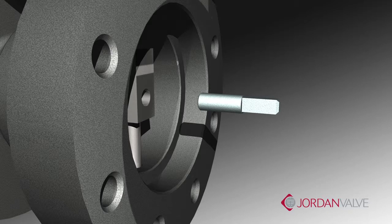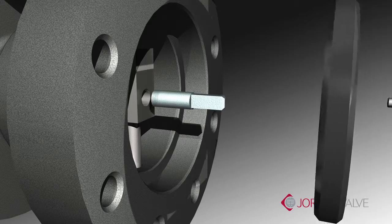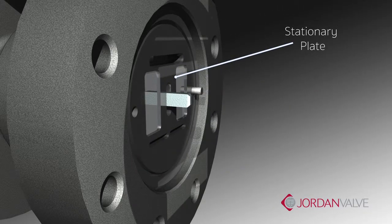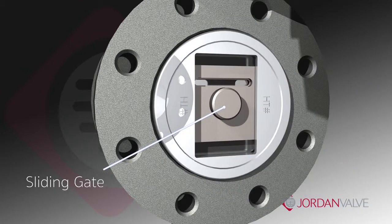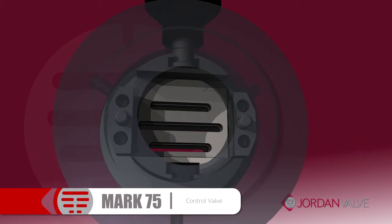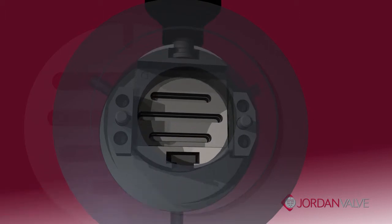The sliding gate is made up of three components: a stationary plate with multiple orifices, a slotted disc which moves across the face to control the flow, and the disc guide. When the valve is closed, the disc and plate create a tight seal.